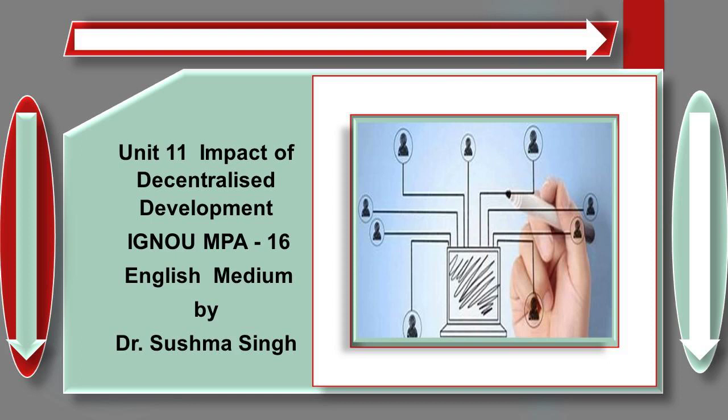Let us move to the next point: functional decentralization. It refers to transferring subject-specific functions to the local tiers. The functions prescribed under the 11th and 12th schedules are to be transferred to panchayats and municipalities respectively. The full transfer of functions under 29 and 18 subjects has not taken place in almost all the states.